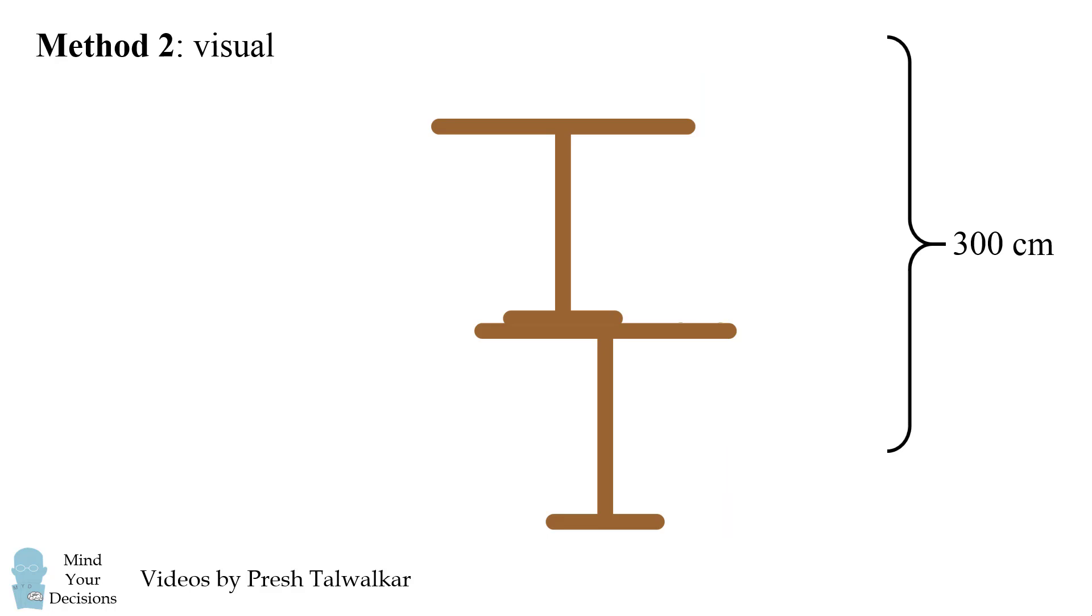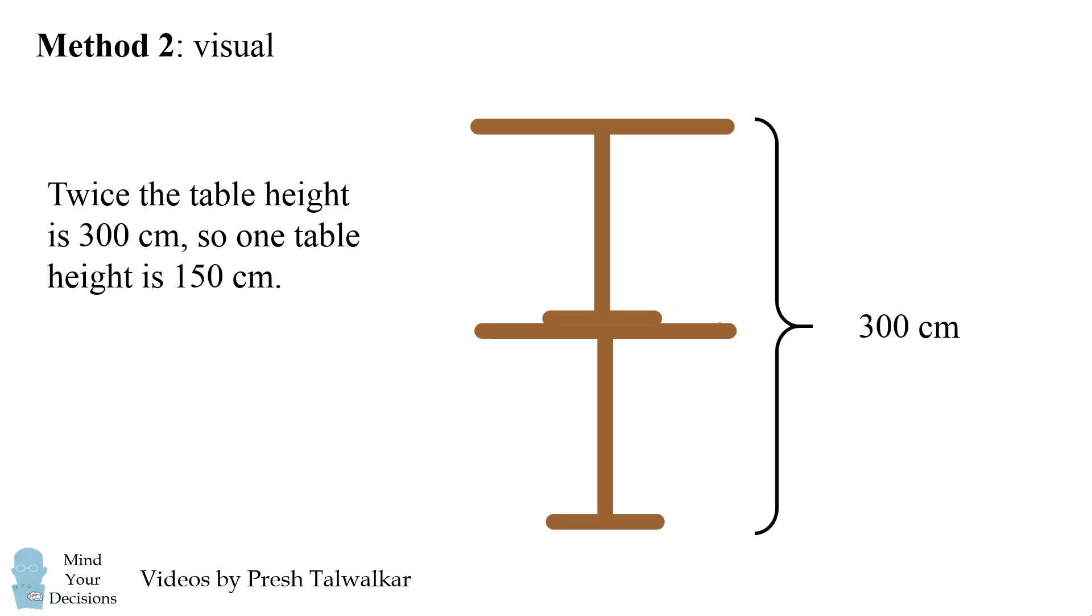We can then erase the animals from the picture, and then we can rearrange it, and we can clearly see that the height of two tables is 300. So the height of one table will be 150 centimeters.